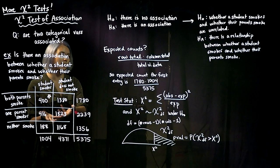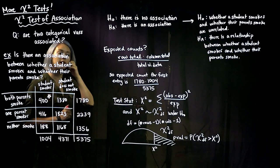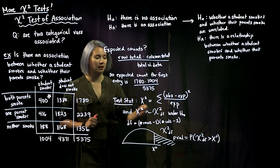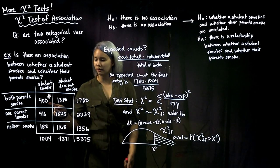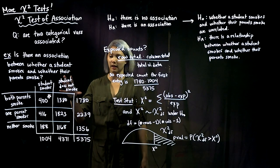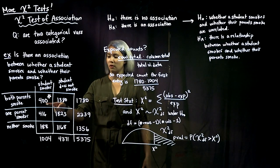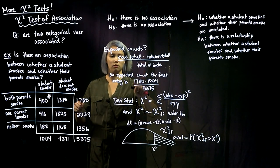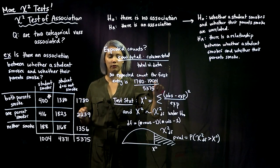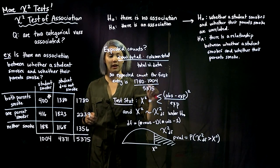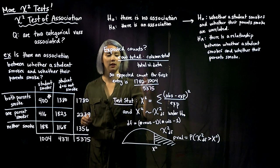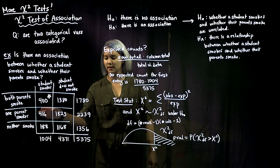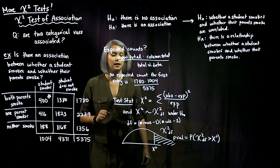Now we know how to get our expected cell counts from the observed, so we can calculate our test statistic. The test stat is still observed minus expected, squared, divided by expected — summed over all cells. Here we have six cells, so we add up six things: for each cell, (observed minus expected)² divided by expected, and add those all up to get our test statistic.